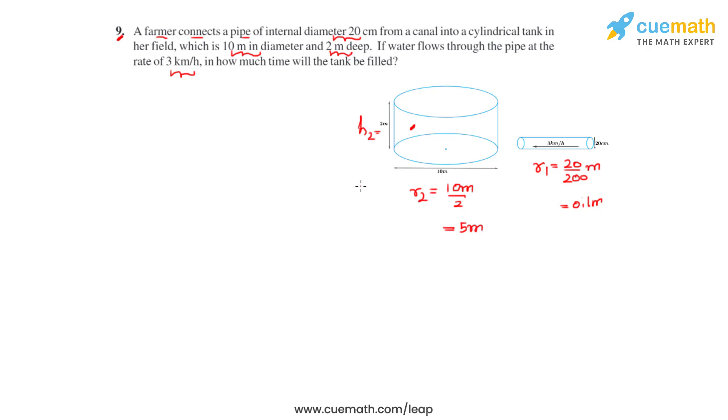To find the volume that flows through the pipe in one minute, we will first have to find the area of cross section. So if we take a cross section like this of this pipe, what we will get is a circle.